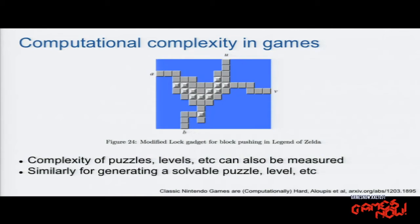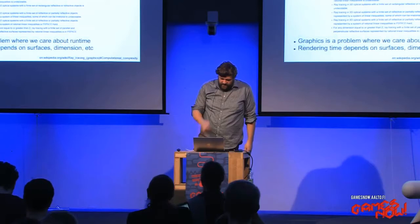This figure from that paper shows one of the block-pushing puzzles from the top-down Zelda games, where you push blocks - and you can only push them once - and have to get from one place to another. This kind of puzzle can very easily run into complexity problems if it's too big. Usually you only have a few blocks in an actual game, but if you imagine one of these that's a thousand by a thousand blocks, it becomes very hard very quickly.